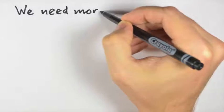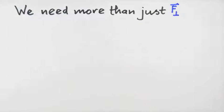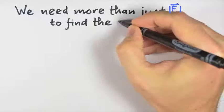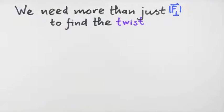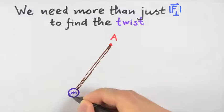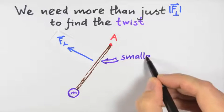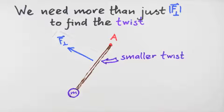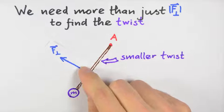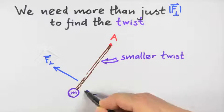Now even with the magnitude of this perpendicular component of F in hand, we still haven't completely specified the magnitude of the twist that can be applied. The same perpendicular component yields a smaller twist if it is applied closer to the axis. Similarly, if you apply this component of F farther from the axis, the twist is larger.